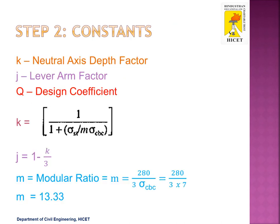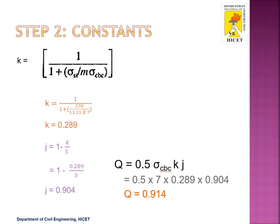Next, we need to find three constants: K, J, and Q. K is the neutral axis depth factor, J is the lever arm factor, and Q is the design coefficient. The formula for K is 1 divided by (1 plus sigma ST divided by M into sigma CBC), where M is the modular ratio. The modular ratio is calculated as 280 divided by (3 into sigma CBC), giving 280 divided by (3 into 7), so the modular ratio is 13.33. Substituting sigma ST, M, and sigma CBC into the formula for K, the neutral axis depth factor is 0.289.